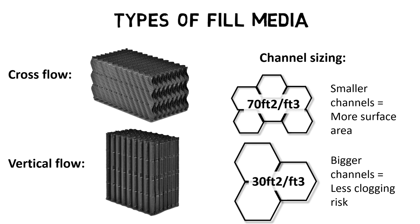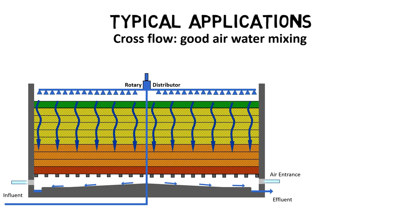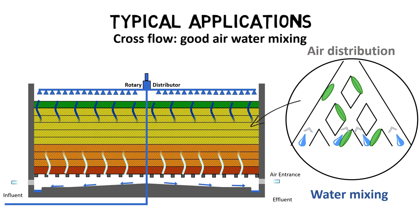Cross flow fill media blocks are used where good air and water mixing is required. A typical application is a trickling filter. The sprayed wastewater from a rotary distributor must moisten the plastic fill media surface area evenly throughout the whole filter. At the same time, natural draft from the trickling filter bottom must reach all plastic fill media blocks.